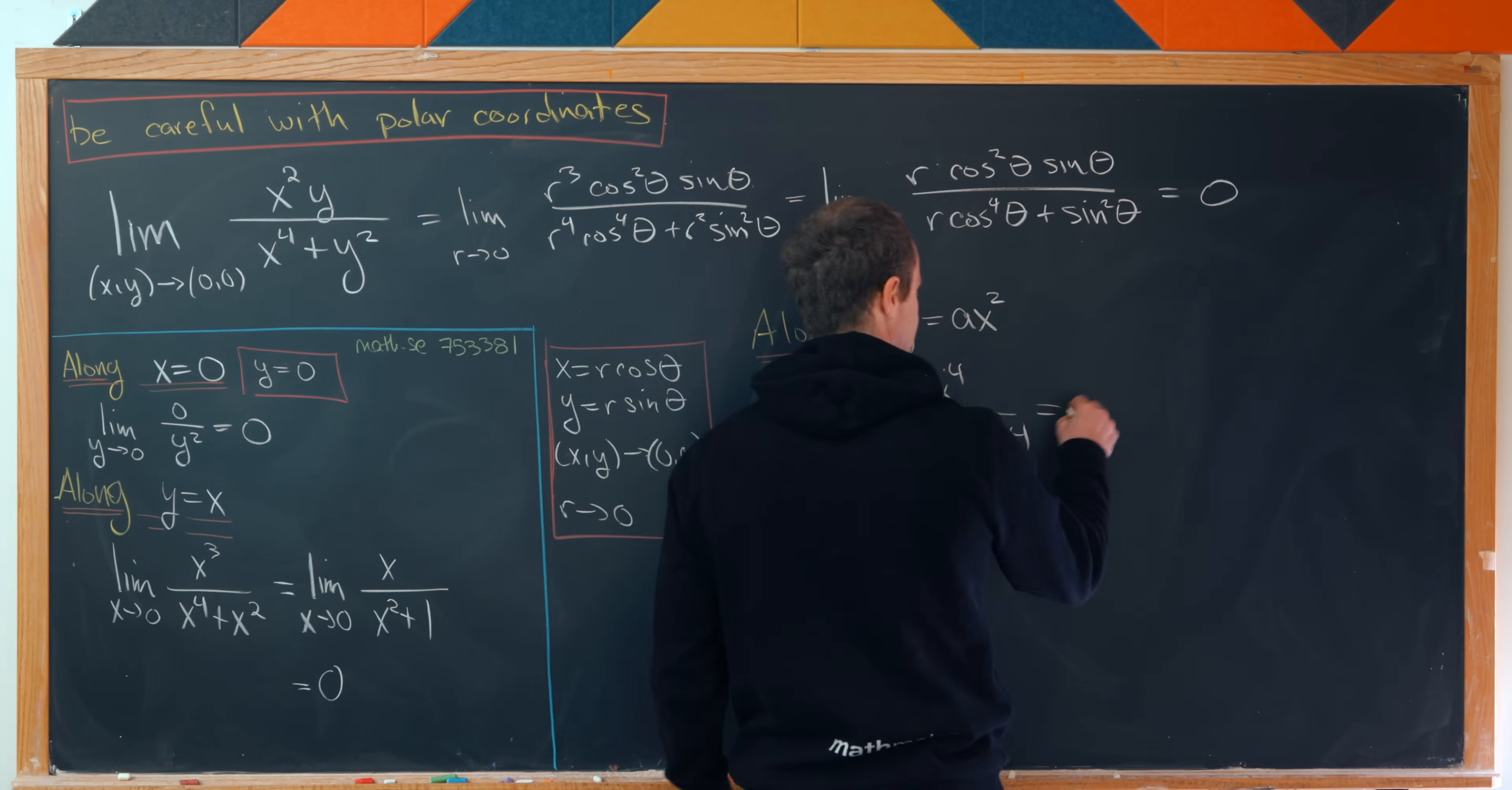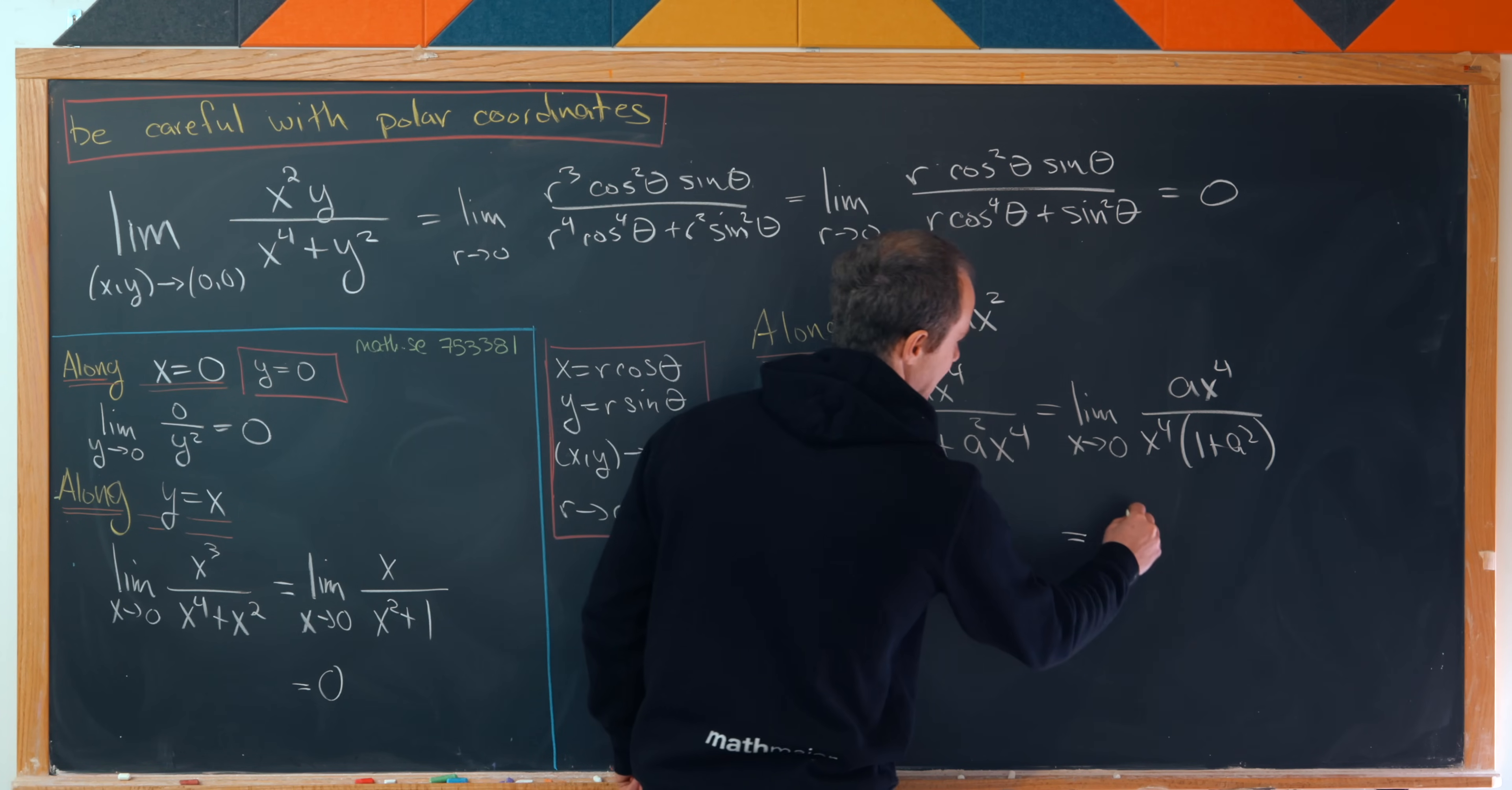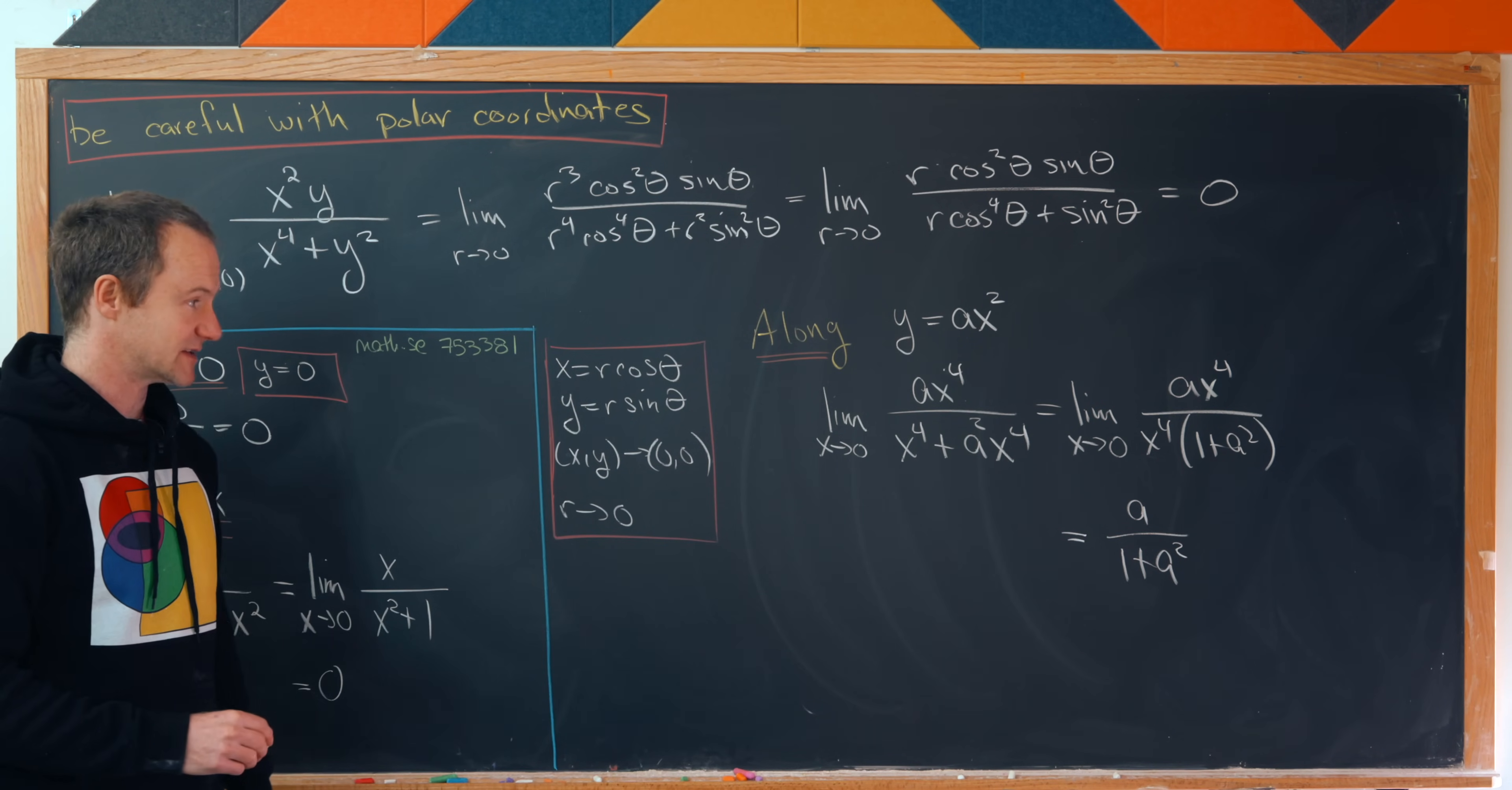Well, we can factor an x to the fourth out of this and we'll see that we have the limit as x goes to zero of ax to the fourth over x to the fourth times one plus a squared. So that'll simplify to a over one plus a squared, given that those x to the fourth terms cancel.